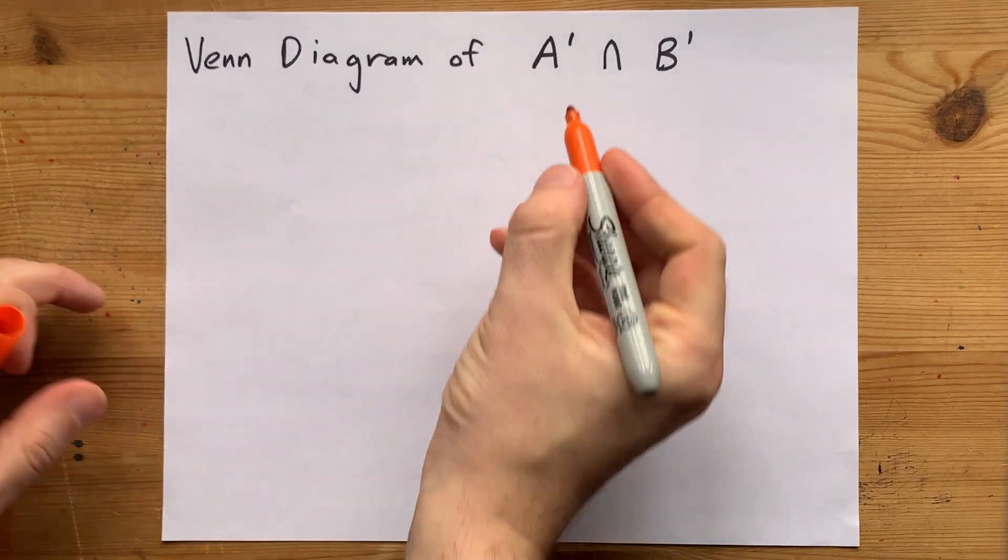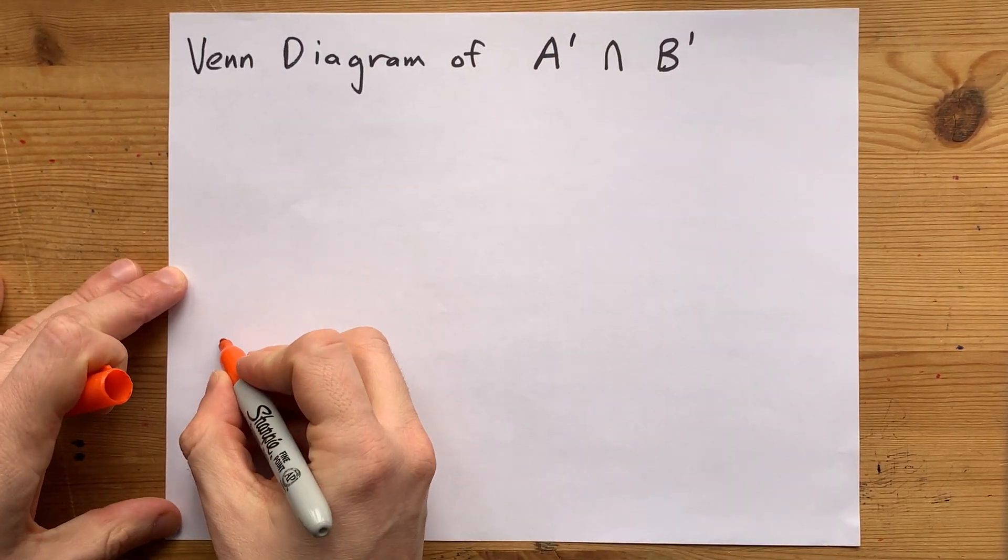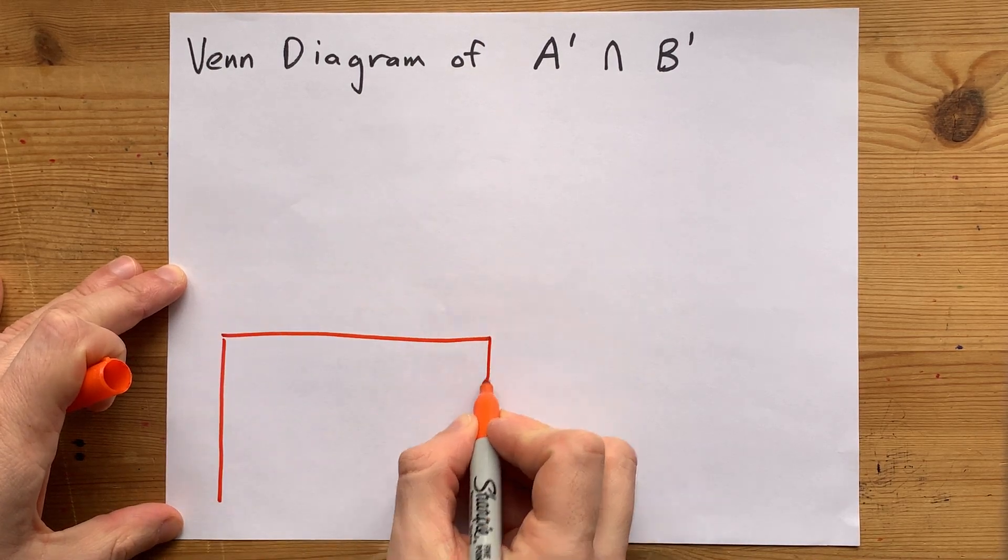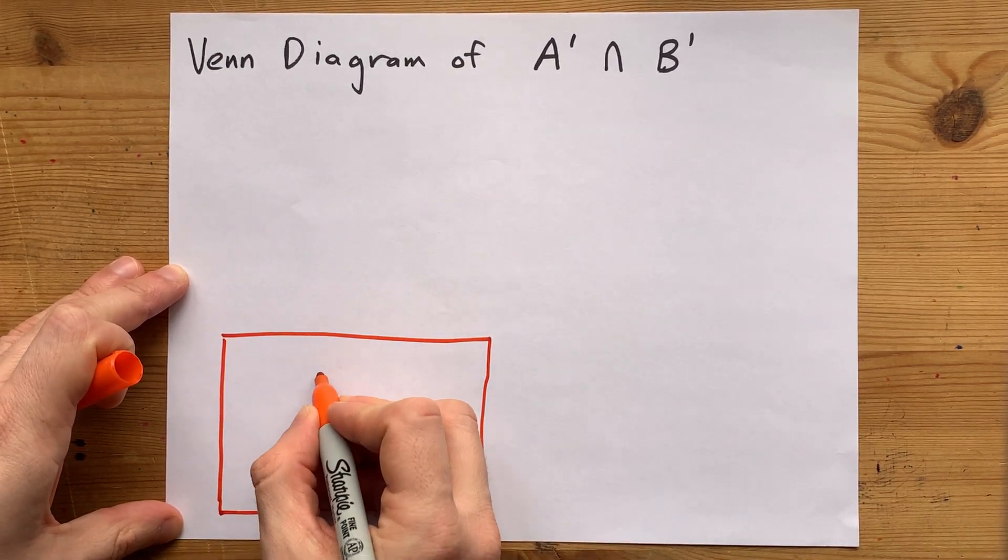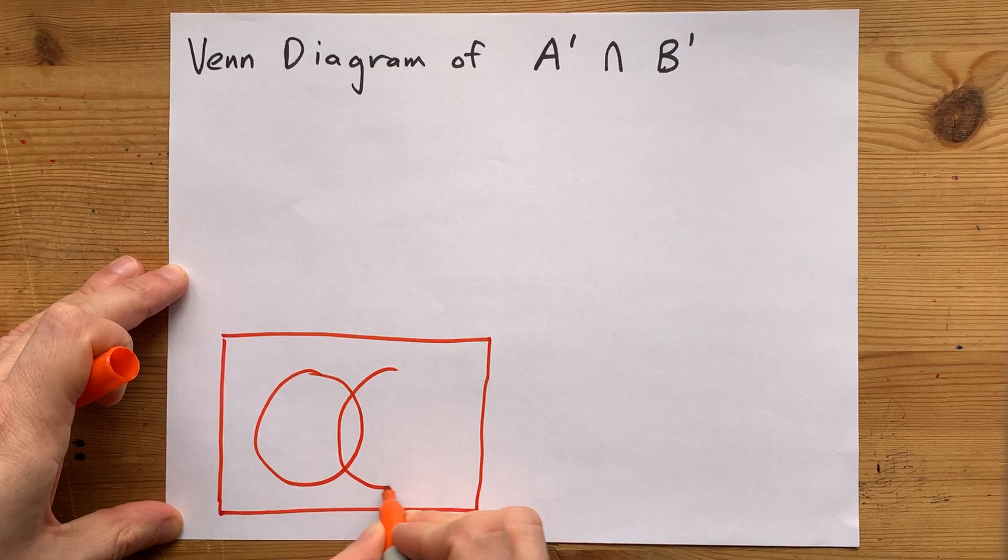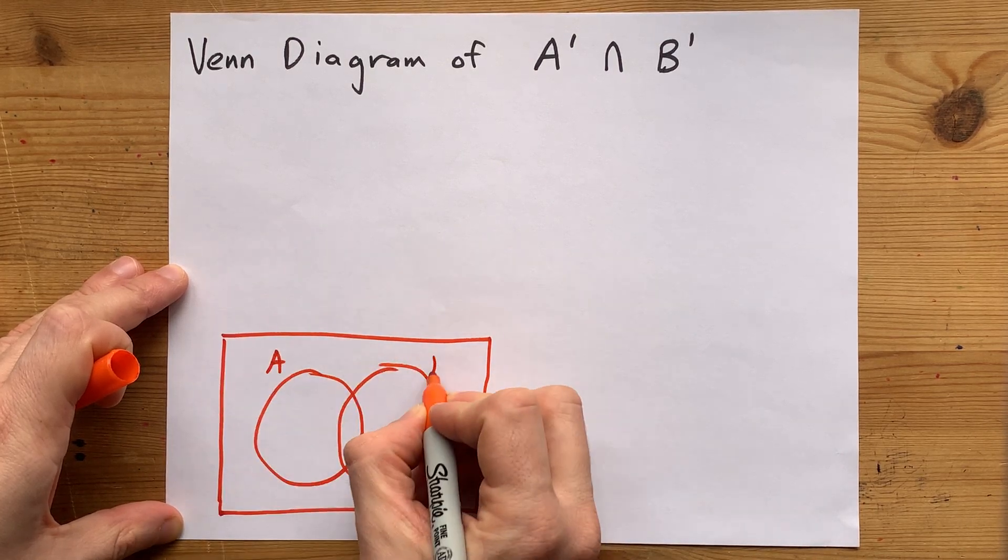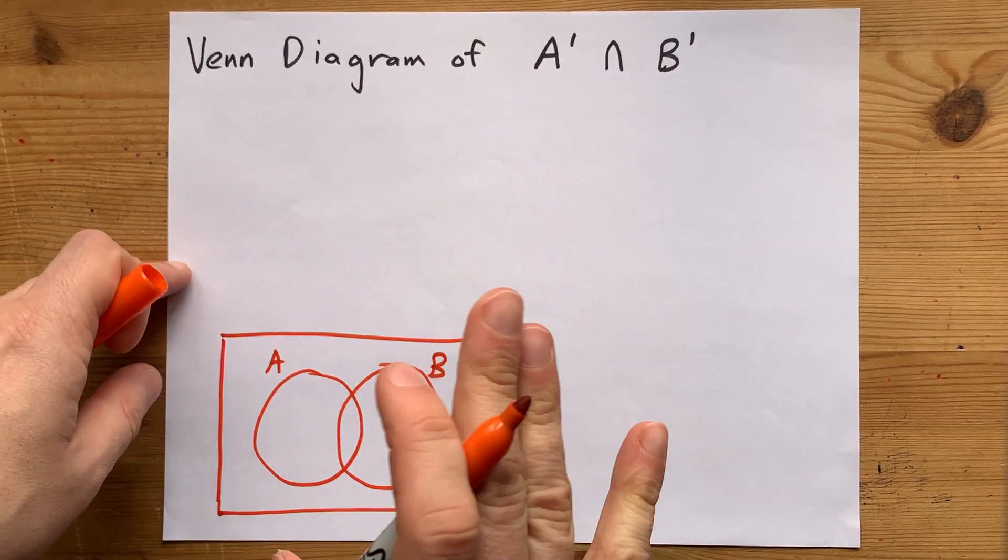We're going to draw the Venn diagram for A complement intersect B complement. I'm just going to draw my quick little two-circle Venn diagram here, where we have section A and section B, and I'm actually going to draw this two ways.